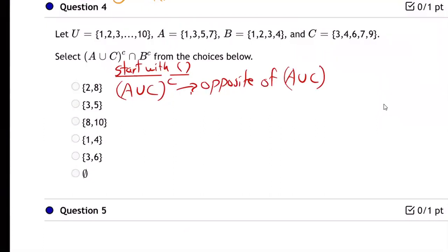So how are we going to find that? Well, we got to start. So first, let's first find A union C, and then second, take the opposite. So that's how we need to begin.